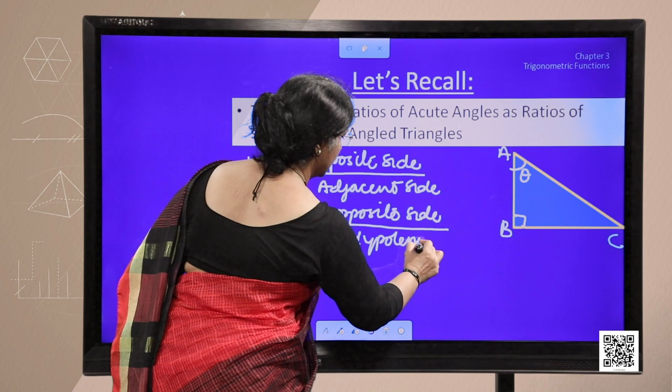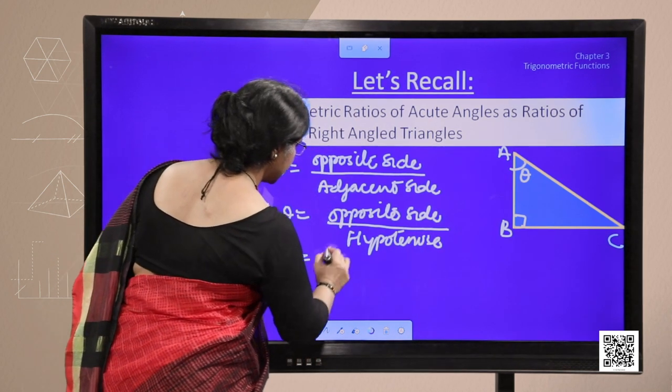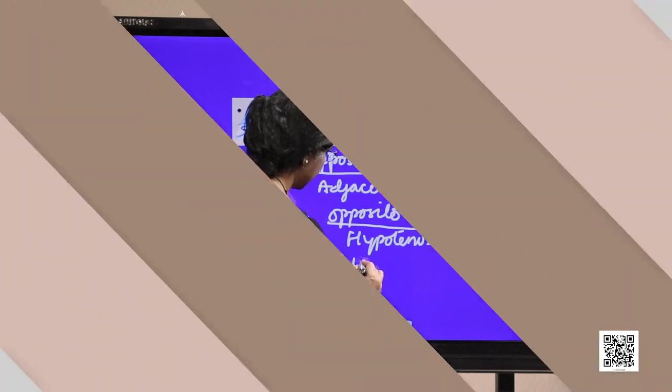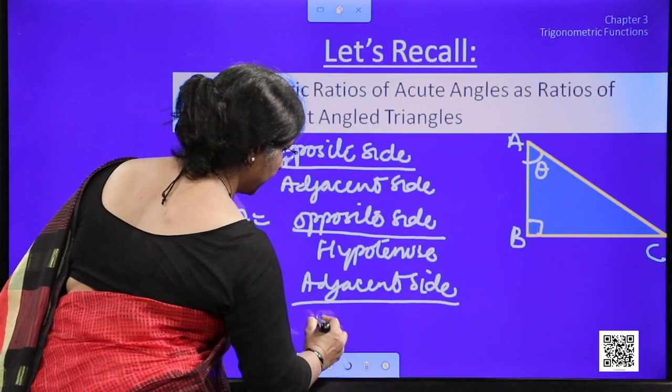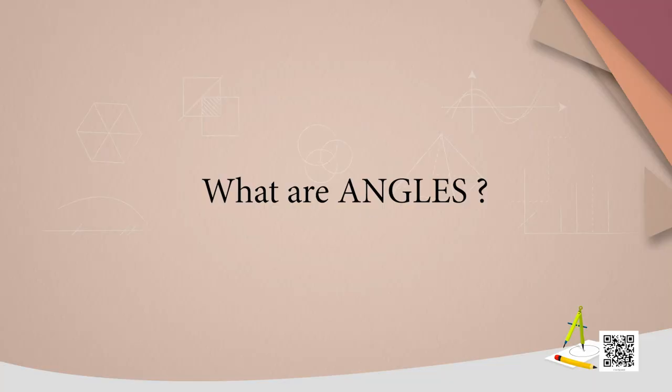Sine theta as opposite side upon hypotenuse and cos theta as adjacent side upon hypotenuse and their complementary angles. Now what are angles?